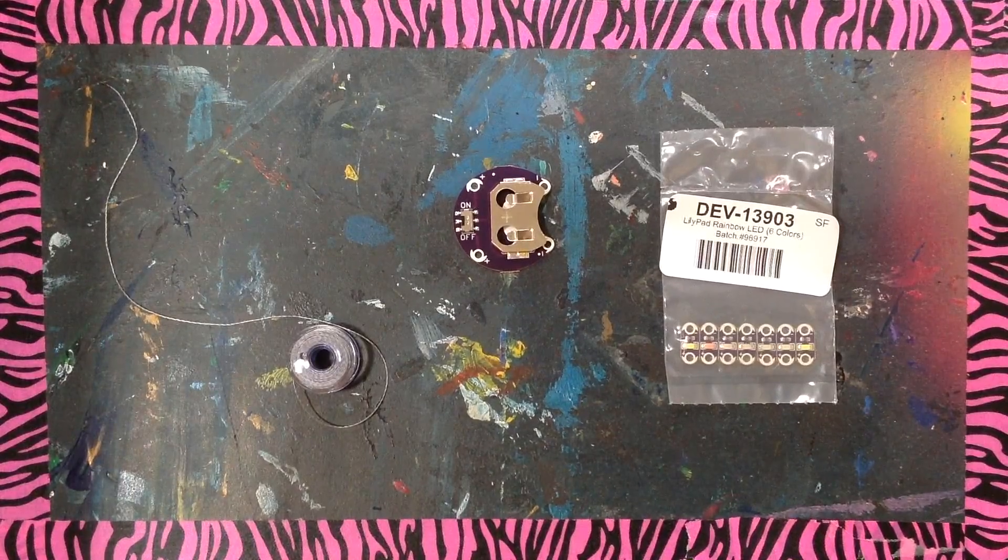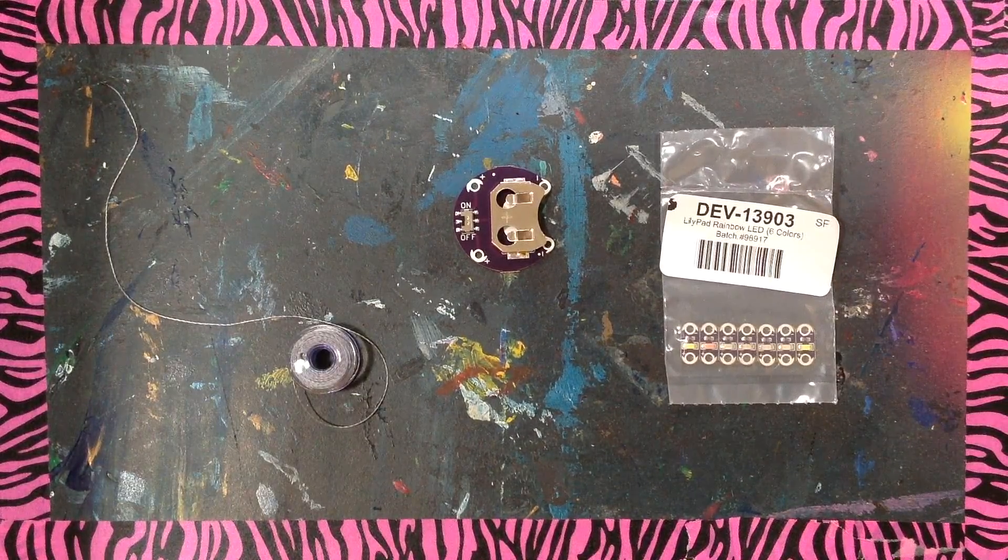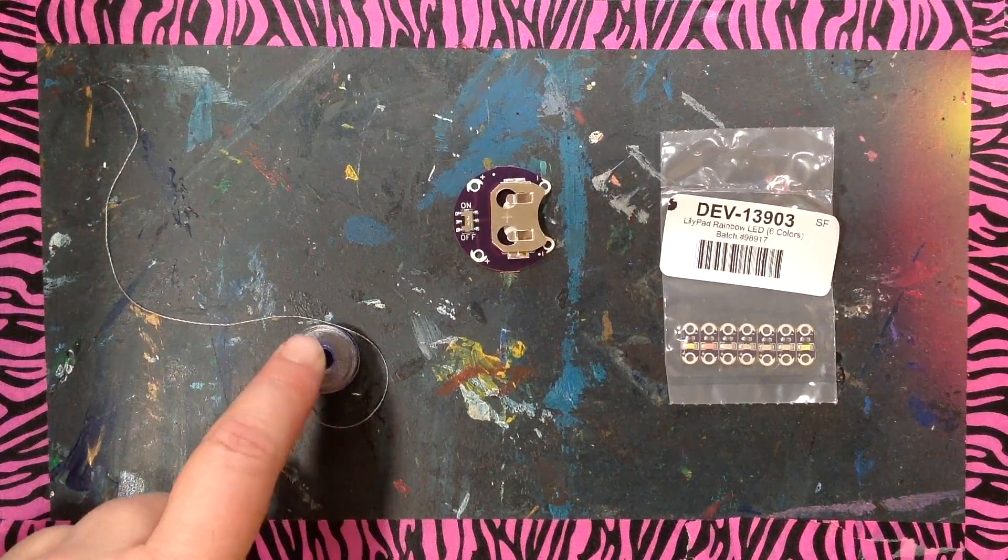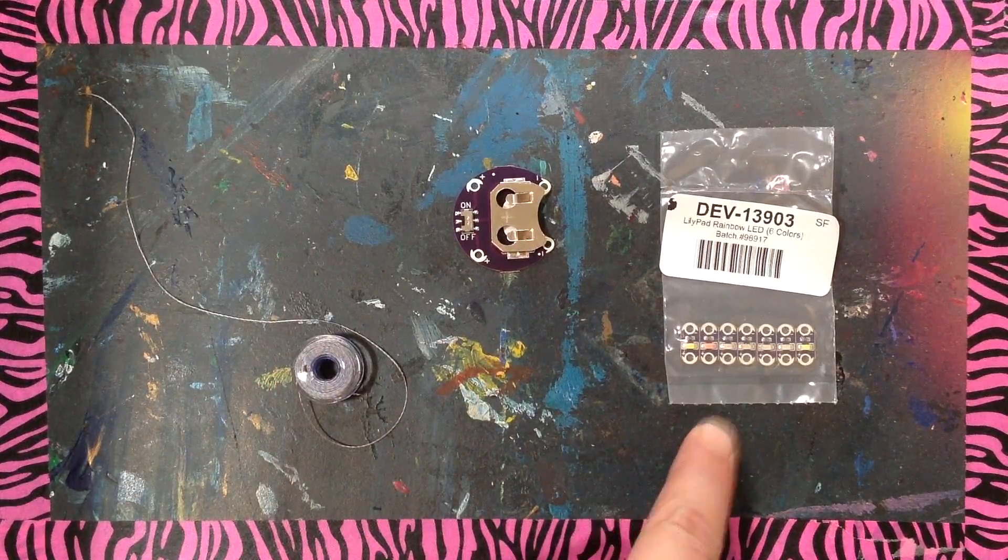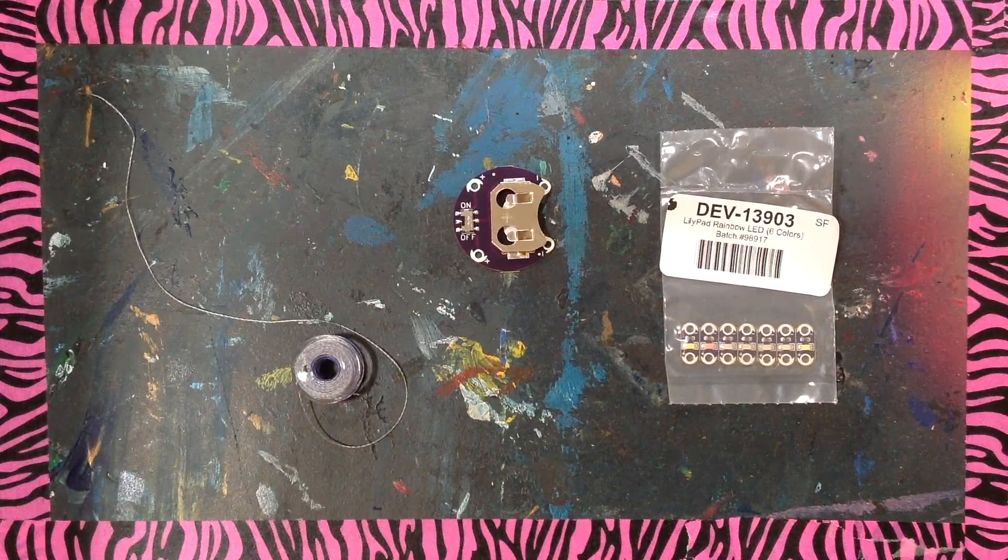If you lose your conductive thread or your LEDs or your battery holder, you will have to purchase another one from Mrs. Miller and this is four dollars, these are a couple dollars, and these are a couple dollars, so don't lose your items.